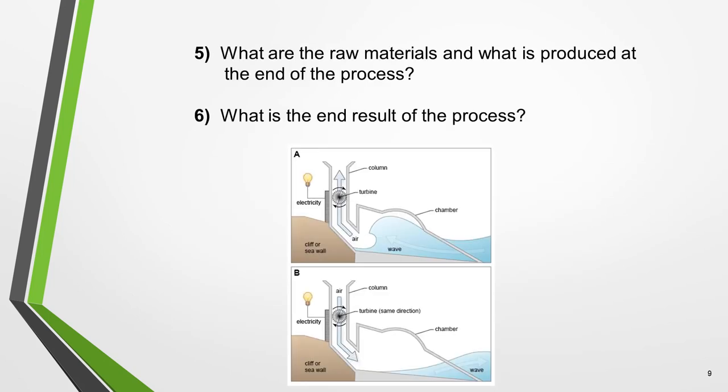Question 5. What are the raw materials and what is produced at the end of the process? These questions obviously apply only to manufacturing processes. For other types of processes, it might be more appropriate to ask the following question. Question 6. What is the end result of the process?